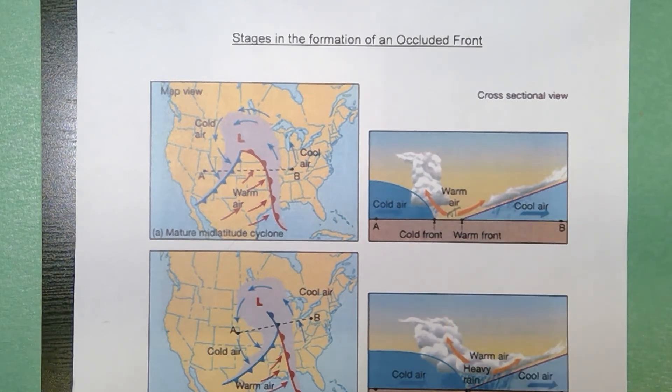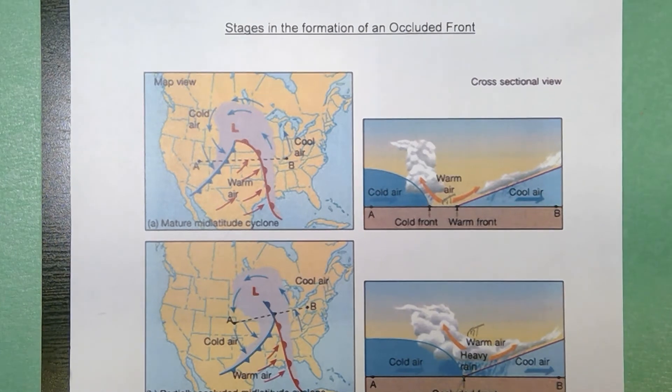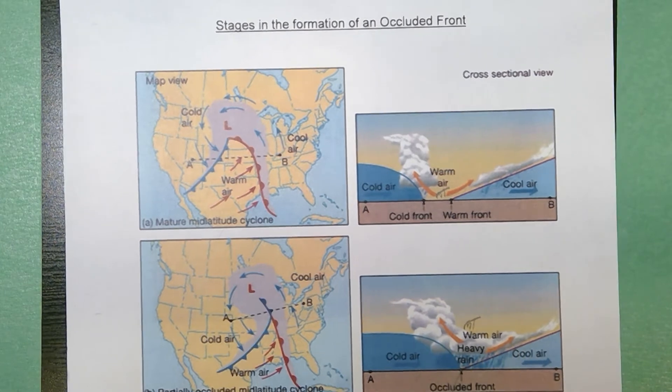When it starts to become an occluded front you'll see up here in the center it begins to form an occluded front. So the cold front collides with the warm front and now your maritime tropical air mass is forced aloft. So you'll get heavy rain, you'll also get significant cloud formation.